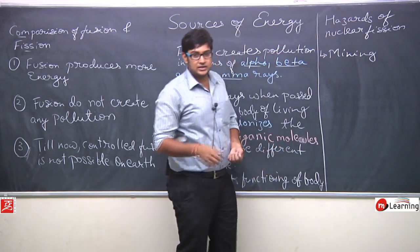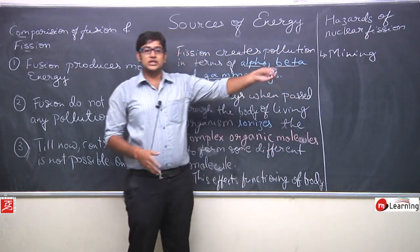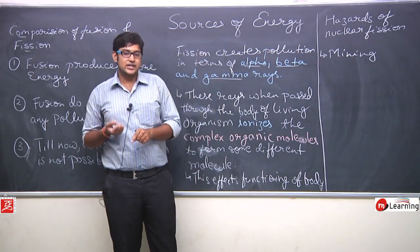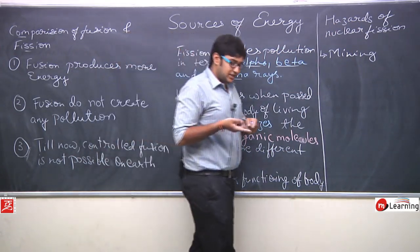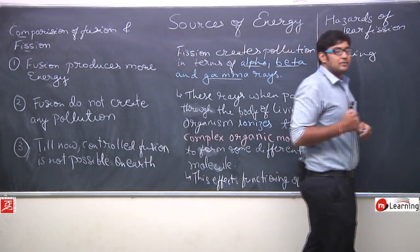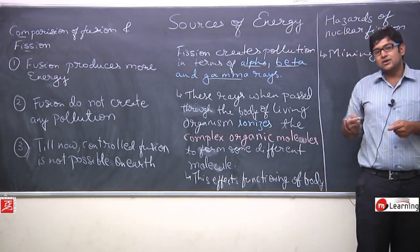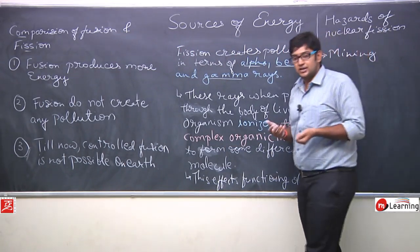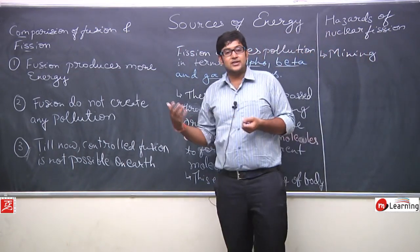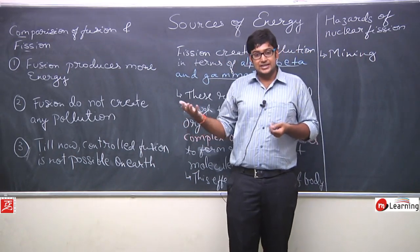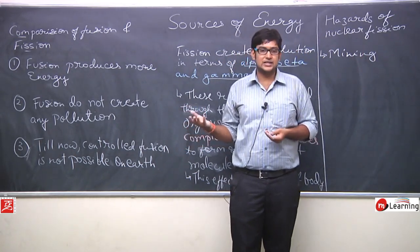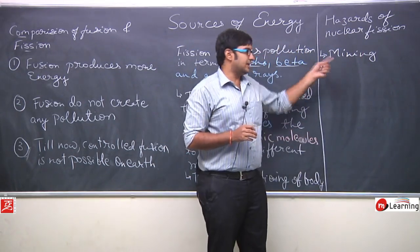So hazard kaha ho sakti hai nuclear fission mein? Sabse pehle mining ke position. Matlab jab workers earth ke andar mine khodke us mein se uranium, plutonium ya thorium bahar nikalte hain. In that case, these three elements are radioactive elements. Toh nikalte samay kya hoga? Nikalte samay uski radiations un workers ki body ko effect karegi. Aur effect karegi se kya hoga? Un workers ki health kharab hoga. Toh it's like a hazard created by the uranium. Uranium ka ek hazard hai. So we will say mining ke case mein ho sakti hai.